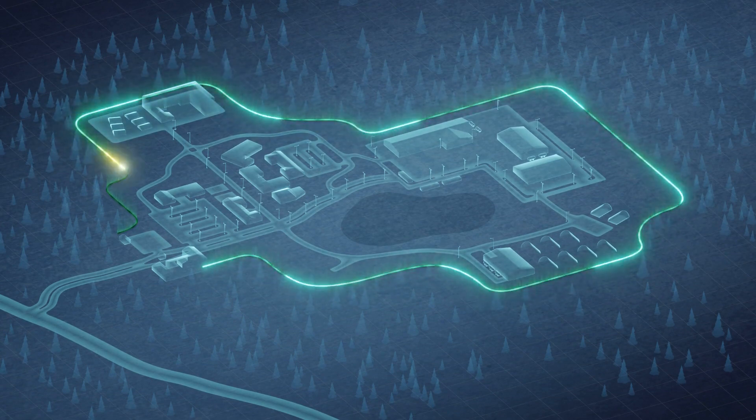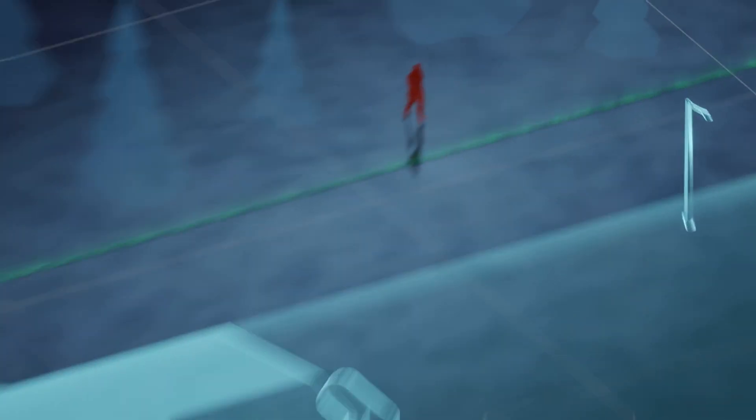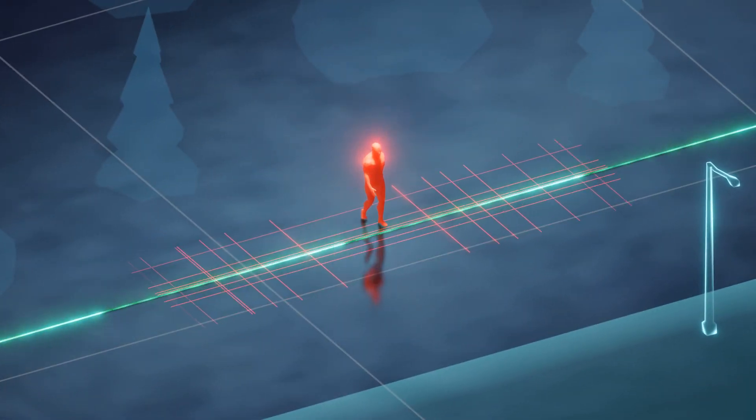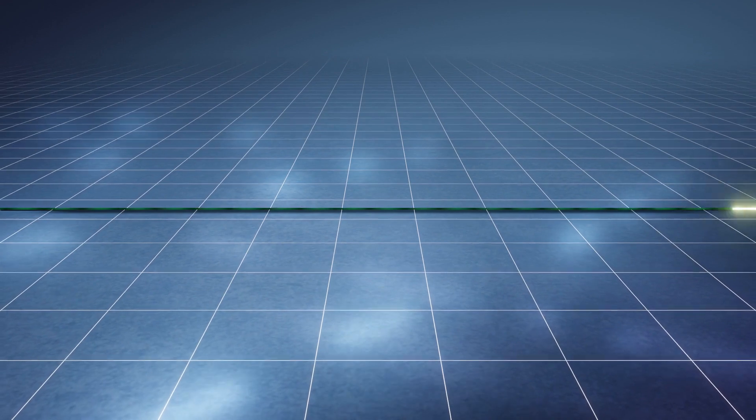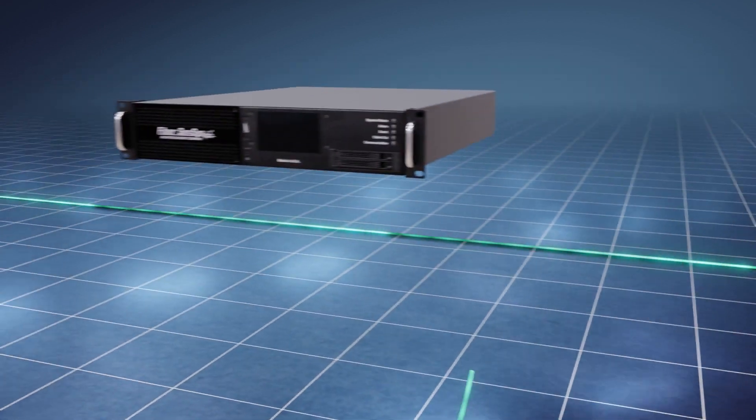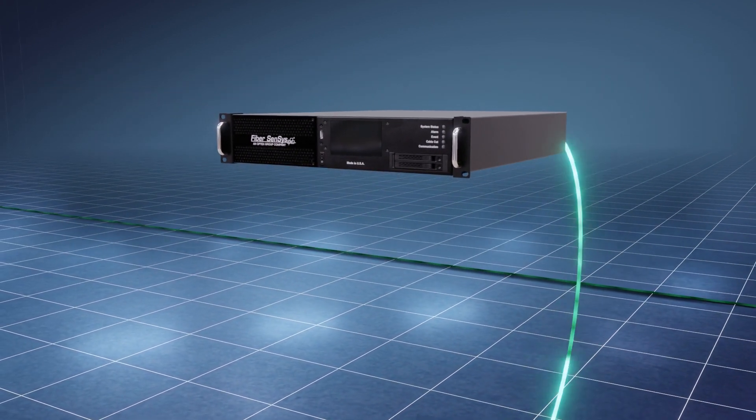EchoPoint utilizes fiber optic cable to sense vibrations and can pinpoint the location of a disturbance to plus or minus 6 meters. The system has two main components: a length of fiber optic cable deployed at the perimeter and a processor that transmits and analyzes a signal along the cable.